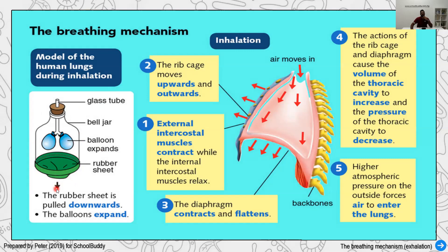When you pull down the rubber sheet, you're simulating inhalation — air goes in and expands the balloon. In real biological terms, when you inhale, the rib cage moves outward and upward. Air fills the lungs, and during this stage the external intercostal muscles contract while the internal intercostal muscles relax — they are antagonistic muscles, so one contracts while the other relaxes.